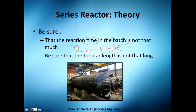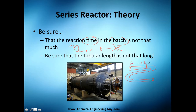Be sure that the tubular length is not that long if you're speaking about a tubular reactor. If the reactor is very long, maybe at one meter A turns into B — that's perfect, we just need that length, let's say one meter — but then you have another meter and another meter, and you give sufficient time to transform B into C, which is our unwanted product.